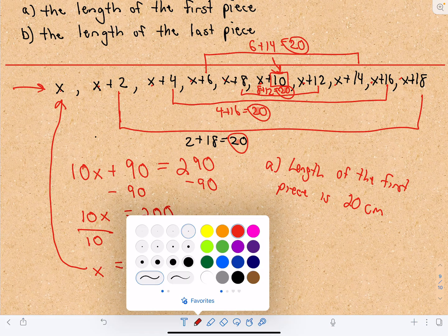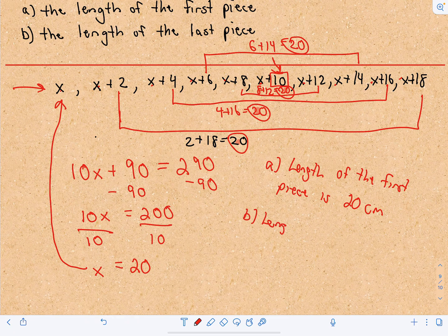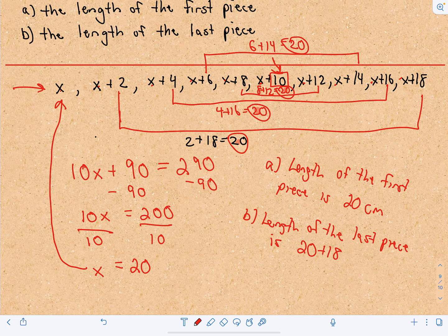Now we want to find the length of the last piece. The last piece had a length of x plus 18 centimeters. We can figure that out easily: the last piece is 20 — because that's the value of x — plus 18, which equals 38 centimeters. And we're done — we have the solution for both parts.